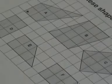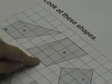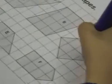A has one right angle. B has no right angles. C has four right angles. D also has four right angles.